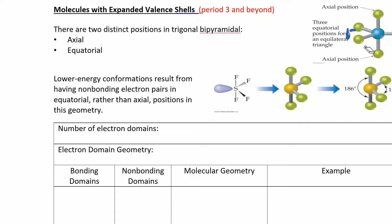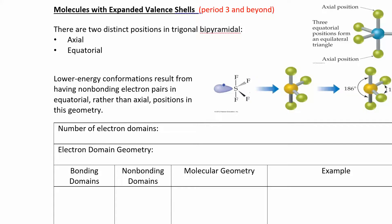When adding non-bonding electron domains, the lone pairs go to the equatorial positions because the bond angles there are bigger — 120 degrees — giving them more space to spread out. Lone pairs take up more space and have more repulsion, compressing angles a bit. The goal is to get electron domains as far apart as possible. As lone pairs are added and we go from five bonding to four or three, they come off the equatorial positions. With five electron domains, the electron domain geometry is called trigonal bipyramidal.